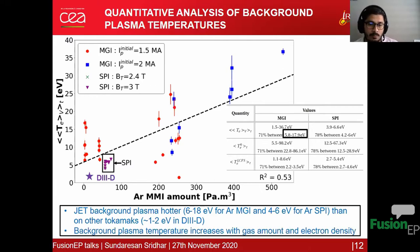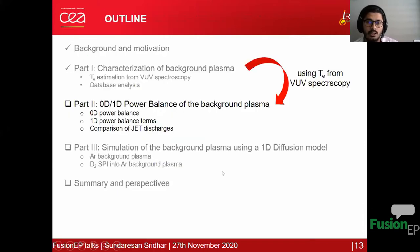In addition, the background plasma temperature in JET was found to increase with the gas amount used to trigger disruption, as you can see in this figure, along with the electron density in the first-type layer region.